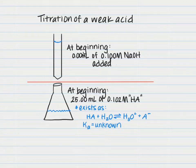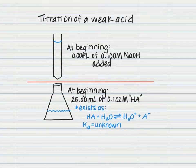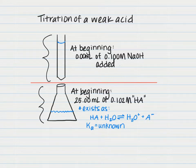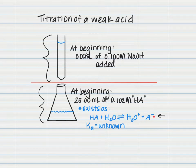Chapter 18 covers weak acids and weak bases, specifically the titration of them — how we can glean information from the titration of a weak acid with a strong base. In this case we are titrating a weak acid with a strong base. At the very beginning we have the burette and the Erlenmeyer flask, and we haven't added any sodium hydroxide yet — only the weak acid, which I'm naming HA, is in the Erlenmeyer flask. The dissociation we're looking at is a weak acid with water associating into hydronium and the conjugate base A⁻. We don't know the Ka, so the purpose of this titration is to find the Ka of the weak acid.